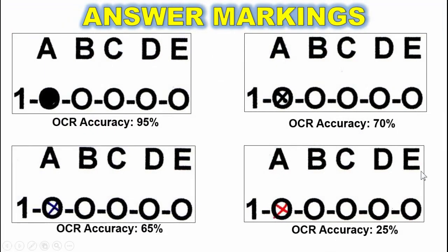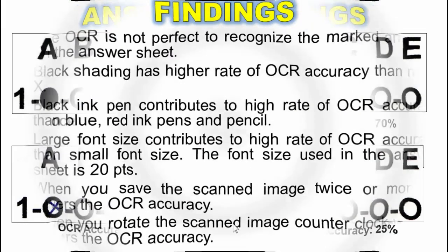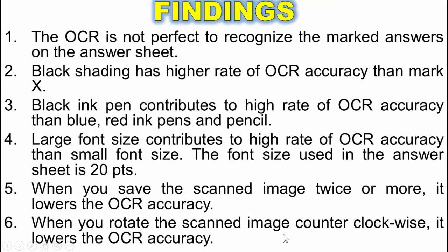I experimented with two types of answer markings: black shading and Mark X, as well as the colors of the pen. The black shading has a higher OCR accuracy than Mark X. The black color contributes to a higher rate of OCR accuracy than blue and red colors of the pen. These are the findings that I found in my experiments.